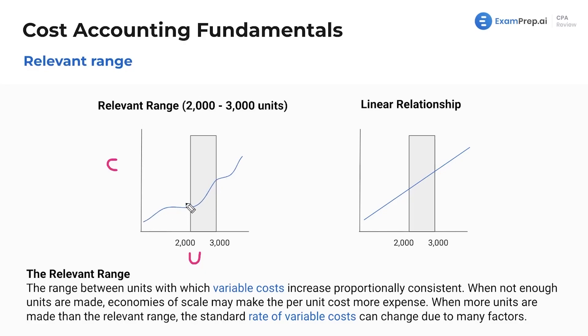And same with here outside the relevant range, lower than it, variable costs are $5, $6, $7, now they're back down to $4. They're just all over the place. But once you make more or less units than what falls within the relevant range, variable costs per unit will change.